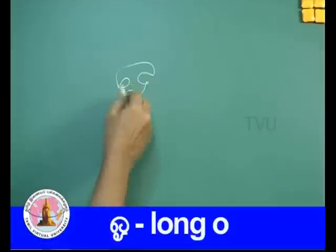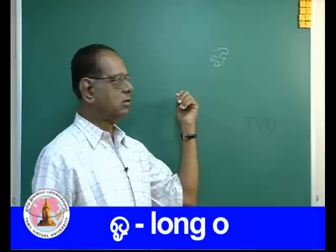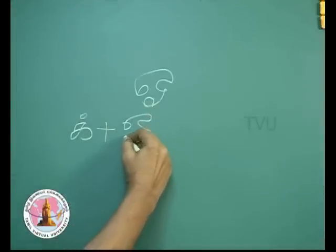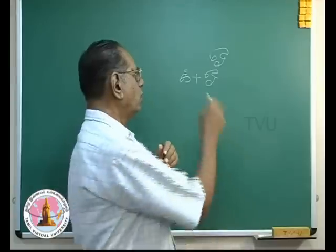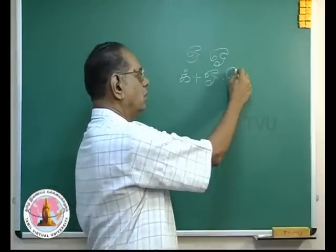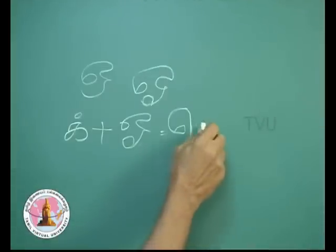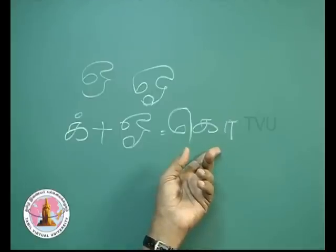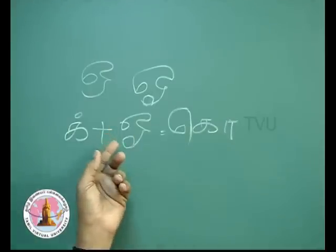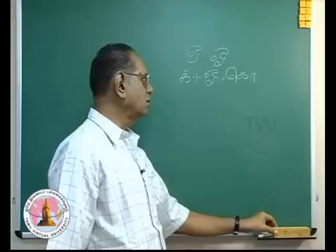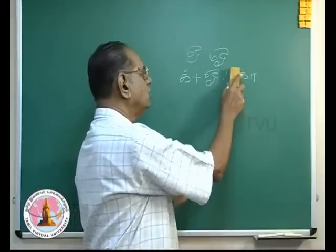The next vowel is O and this is to be added to the consonants. How do we do that? This is the consonant and this is O. For O, we put the A symbol, the consonant and the symbol for O — that was CO. Now we are going to have the combination of O with the consonant, so naturally the shape is to be changed a little.